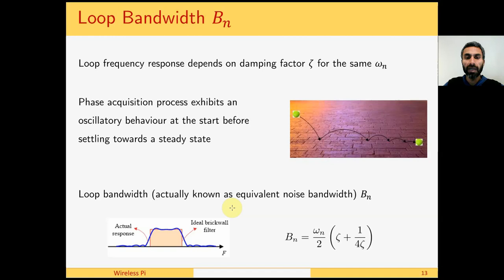Therefore loop bandwidth, which is called equivalent noise bandwidth as well, and sometimes they are called loop noise bandwidth, is defined such that an actual response of the loop is drawn and an ideal rectangular brick wall filter is drawn as well. And the area of this rectangular filter is the same as the total area under the curve of this loop response, and hence we say that this is the bandwidth of the PLL.